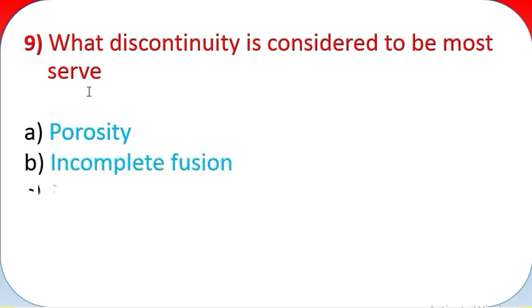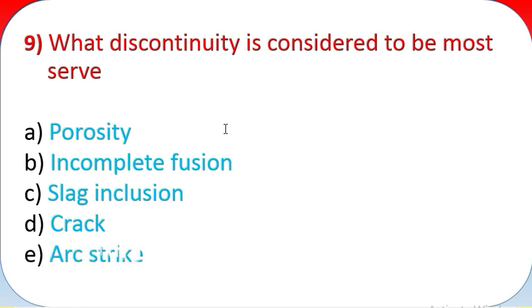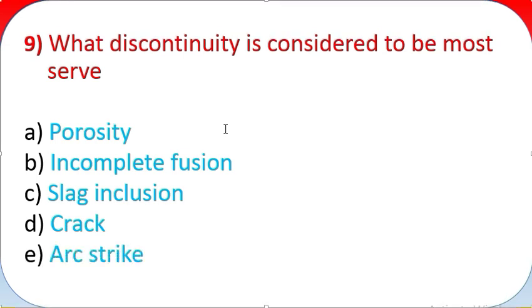Question 9: What discontinuity is considered to be most severe? A: Porosity. B: Incomplete fusion. C: Slag inclusion. D: Crack. E: Arc strike.